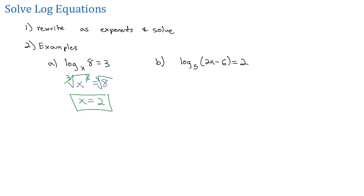Again, to solve for the x that appears inside the logarithm, we're going to rewrite this as an exponent problem with a base of 5 and an exponent of 2 equals the answer of (2x minus 6). Well, 5 squared we know is 25 equals 2x minus 6.